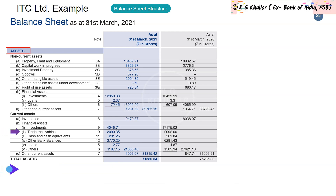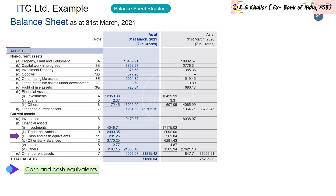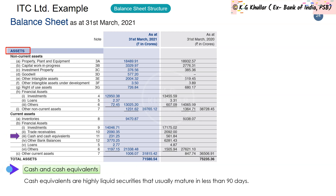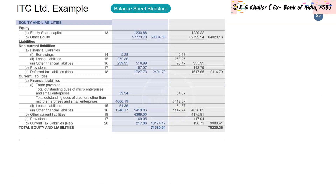Trade Receivables — also known as Account Receivables — are financial assets representing the amount owed to the firm by customers for goods and services sold on credit. Cash and Cash Equivalents are next: cash you already know, while cash equivalents are highly liquid securities that usually mature within 90 days. Other current assets like other bank balances, loans, and others are self-explanatory; these loans are what the company has given to others with repayment period within a year.